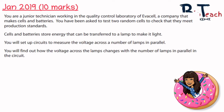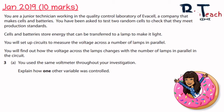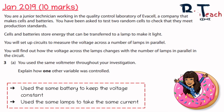For January 2019, question three was worth 10 marks and was a physics-type experiment. Part A said you were a junior technician working in a laboratory at Evacel, a company that makes cells and batteries, and you'd been asked to test two random cells to check if they meet production standards. The scenario involved voltage across the number of lamps in parallel. Question three said that you used the same voltmeter throughout — state what other variable you controlled. Because you're checking cells against production standards, you'd need to use the same battery to keep the voltage constant and also use the same lamp so it can take the same current.